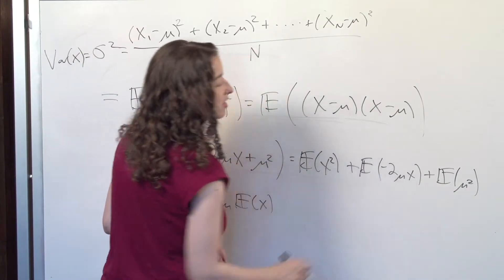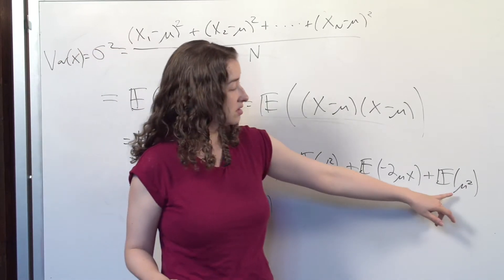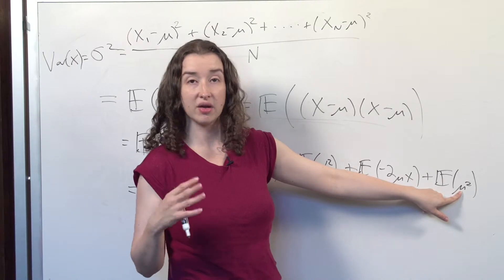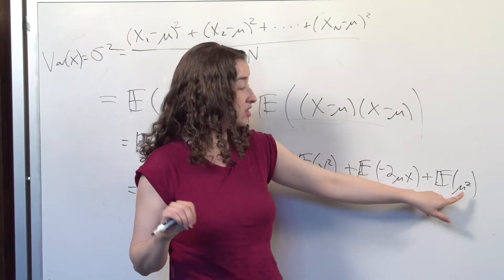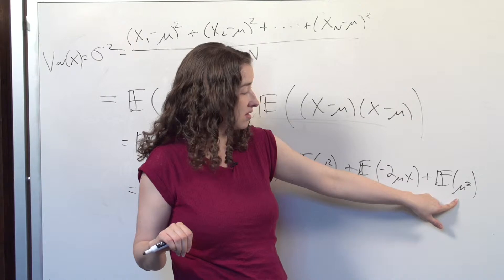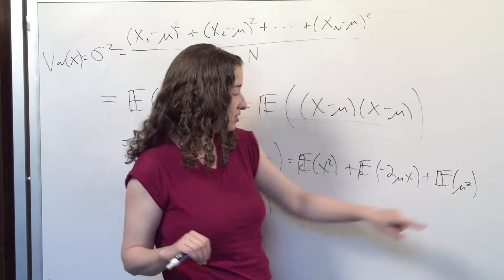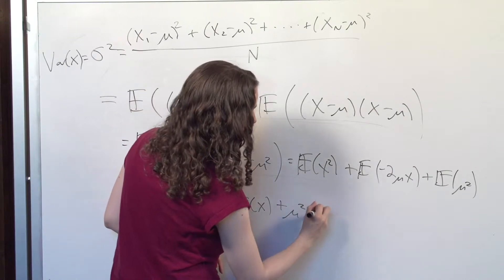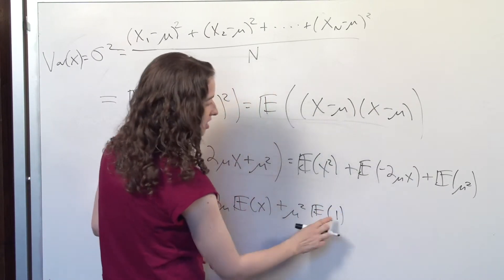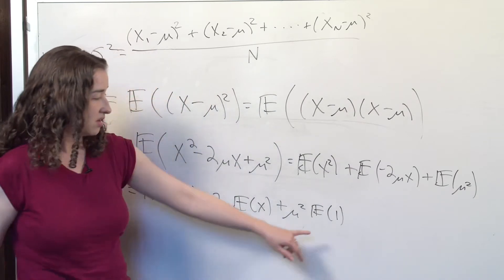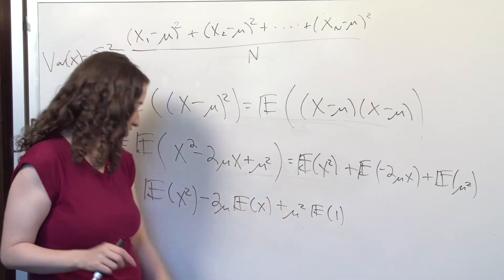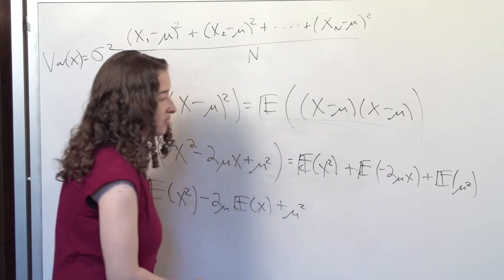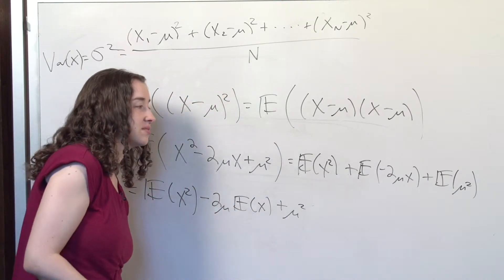What about the expected value of mu squared? Mu is just a constant — it doesn't vary based on which x I happen to be thinking of, so mu squared is also just a constant. I can pull this out: mu squared times the expected value of 1, which is just 1. So mu squared times 1 is mu squared. The expected value of a constant is just that constant.